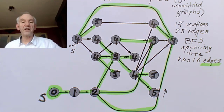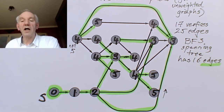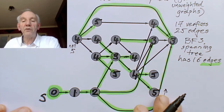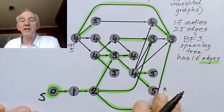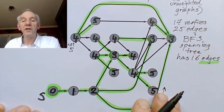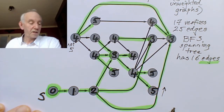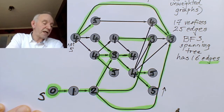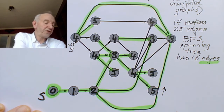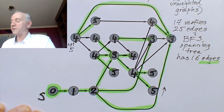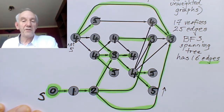The other thing worth noting is that if you look at the nine edges which we have left out — these are omitted edges — this is a characteristic of the BFS method. These omitted edges are of two types only.